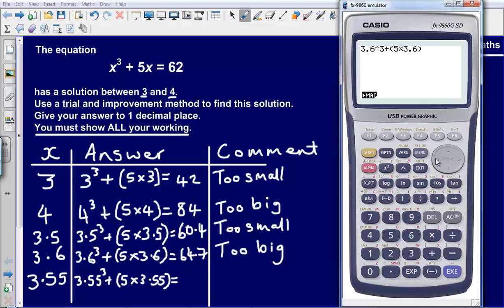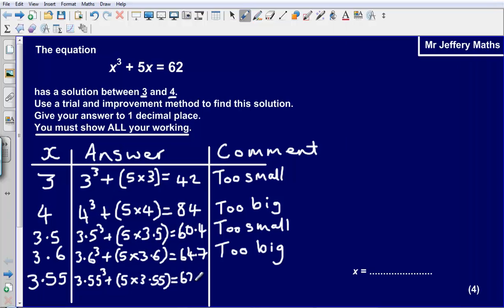So just putting that into the calculator. And let's see what that comes out as. That comes out as 62.488875. So I am going to call that 62.5. And still my answer is too big.